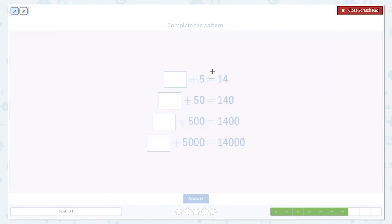One more time. First, we check for the pattern: 5, 50, 500, 5,000, looks good there. 14, 140, 1,400, 14,000, looks good on the right. That means if we fill out this first box, 9 plus 5 equals 14, we know what goes in the rest of those boxes right away. So we get 9, then 90, then 900, then 9,000.